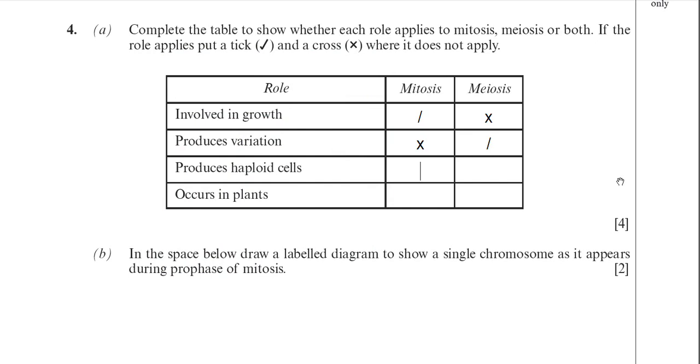Produces haploid cells. Mitosis does not produce haploid cells but meiosis does. Remember that a haploid cell is one that has half the amount of DNA in it.